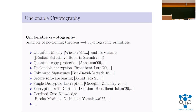Quantum Money was first introduced in 1983 by Wiesner. Since then, there have been many interesting unclonable primitives. There's Copy Protection, which shows how to associate software with quantum states such that these states retain the functionality of the software, but any adversarial entity cannot produce pirated copies. And there's Unclonable Encryption, which I'm going to talk about, tokenized signatures, and more.